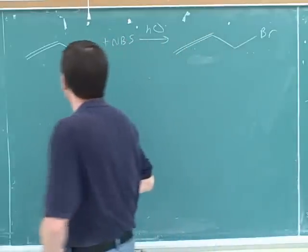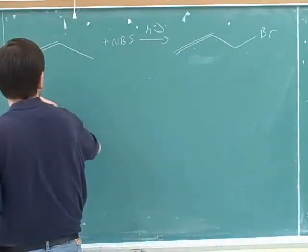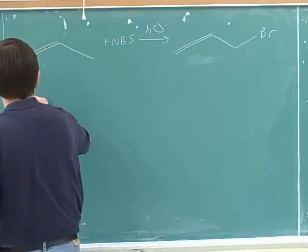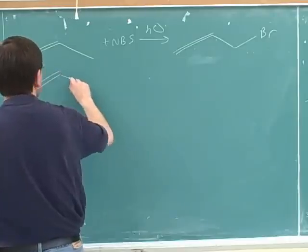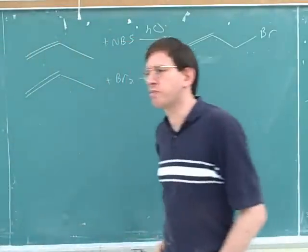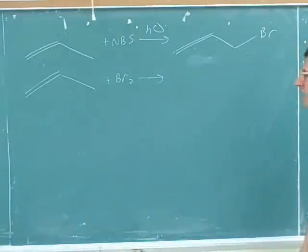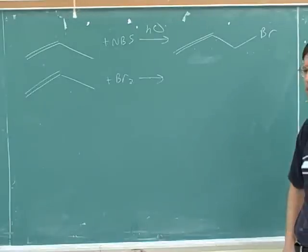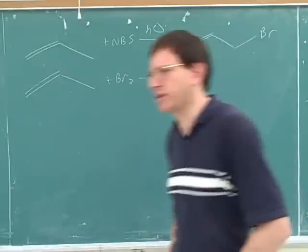All right, so this is our normal allylic halogenation. Let's write what the product would be here. And again, if you want, you can try to go through the whole mechanism. But this is one of the main reactions you learned last term, so you should also be able to just go straight to the product. Any idea what the product would look like here?